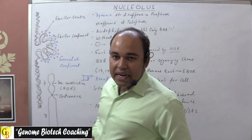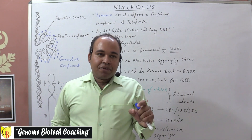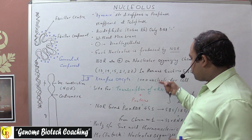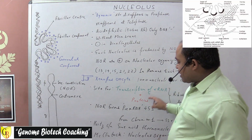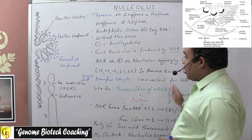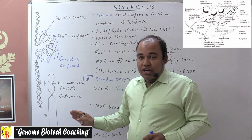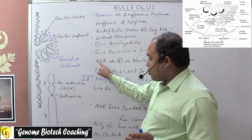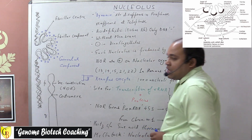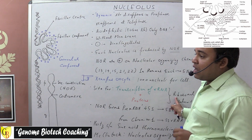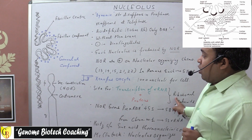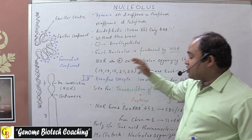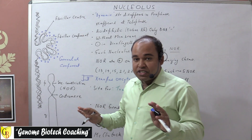Nuclear organizing chromosomes are those that have the DNA which encodes for the formation of rRNA. They lead to the formation of rRNA, and rRNA will get associated with proteins leading to the formation of ribosomes. Each and every living organism must possess at least one nuclear organizing region, without which it will not be able to produce any ribosomes, and without ribosomes there would be no protein biosynthesis. Each nucleolus is produced by a nuclear organizing region present on nuclear organizing chromosomes.